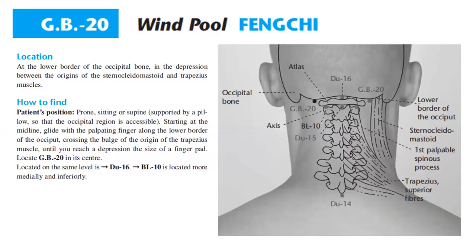Location: at the lower border of the occipital bone, in the depression between the origins of the sternocleidomastoid and trapezius muscle. To find it, patient's position is prone, sitting, or supine supported by a pillow so that the occipital region is accessible. Starting at the midline, glide with a palpating finger along the lower border of the occiput, crossing the bulge at the origin of the trapezius muscle until you reach a depression the size of a fingerpulp. Locate GB20 in its center.